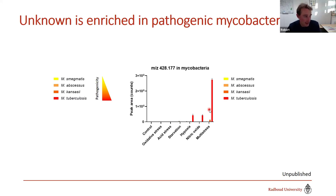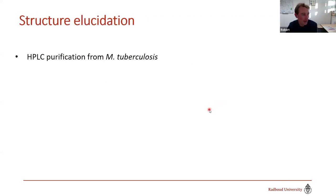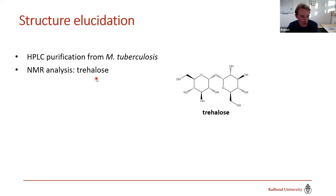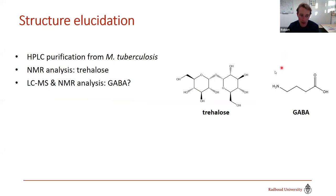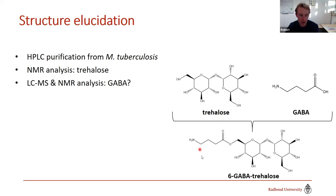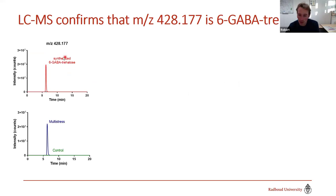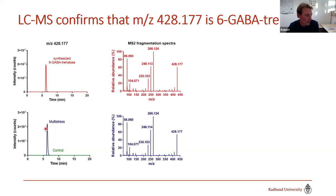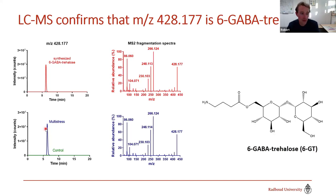Convinced it was worth isolating, we cultured large amounts of MTB, purified the unknown, and NMR analysis showed a trehalose substructure. Combined with LC-MS data, it also indicated a gamma-aminobutyric acid (GABA) moiety, suggesting they were linked — giving a completely novel molecule, absent from any database and not commercially available. We synthesized it, and the synthesized gamma-GABA-trehalose had the same LC-MS retention time and fragmentation spectra as the metabolite formed under multi-stress.